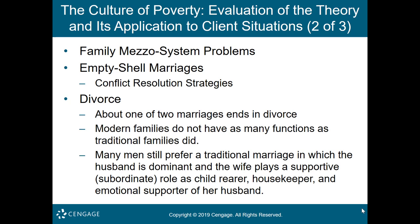Researchers identified three types of empty shell marriages. In the vitalized relationship, the husband and wife lack any real interest in each other — boredom and apathy characterize this marriage and serious arguments are rare. In conflict-habituated relationships, the husband and wife frequently quarrel in private and may also quarrel in public, with the relationship characterized by considerable conflict, tension, and bitterness. In a passive-congenial relationship, the partners are not happy but are content with their lives and generally feel adequate — they may have some interests in common, but these interests are generally insignificant and there is little conflict. About one in two marriages ends up in divorce.